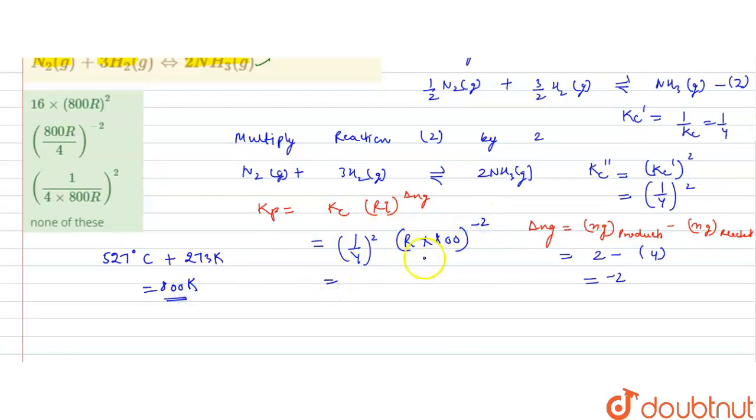So it will be 800 to power minus 2. Now if we take this to denominator, it will become 4 into 800R. And this will be the whole square of this. So Kp will be this for the reaction.